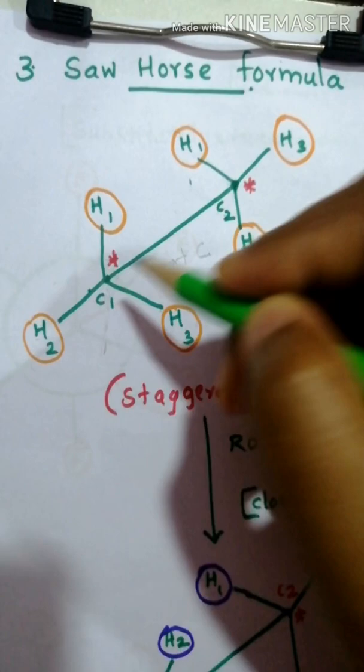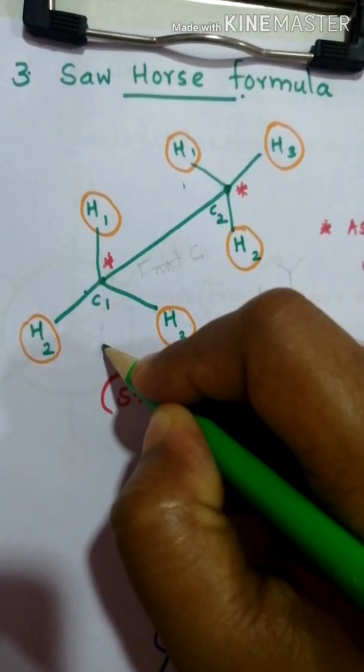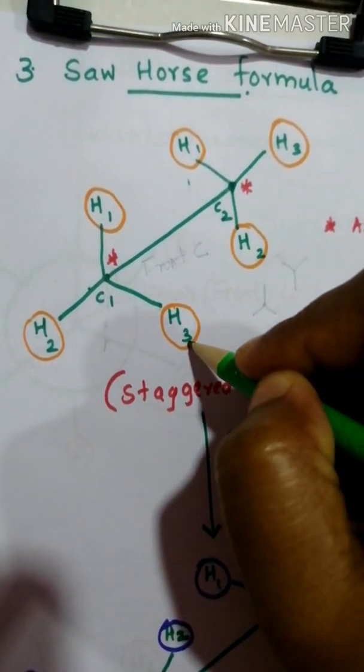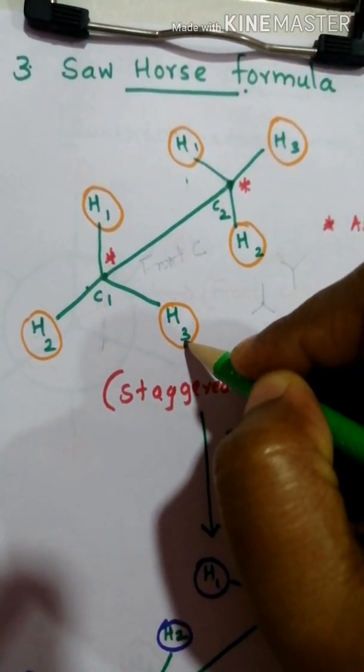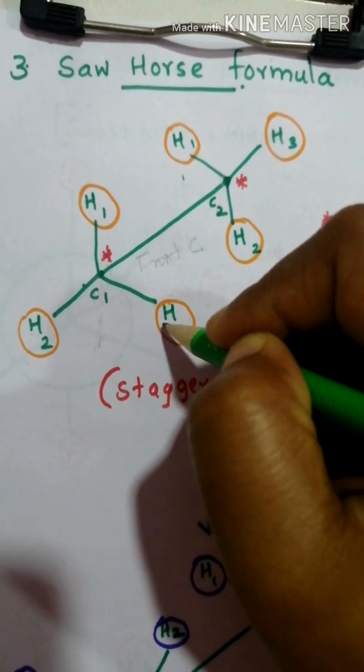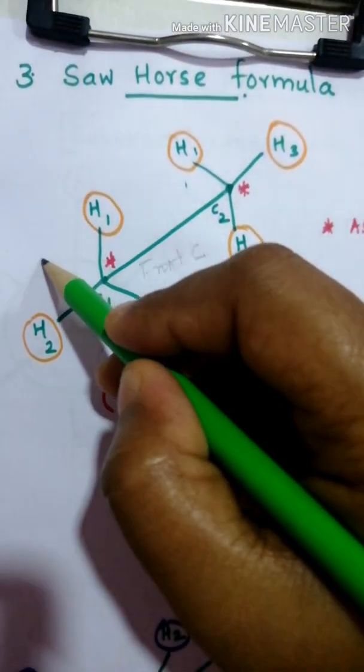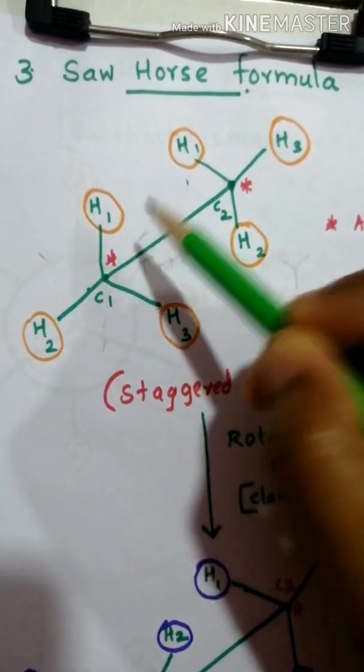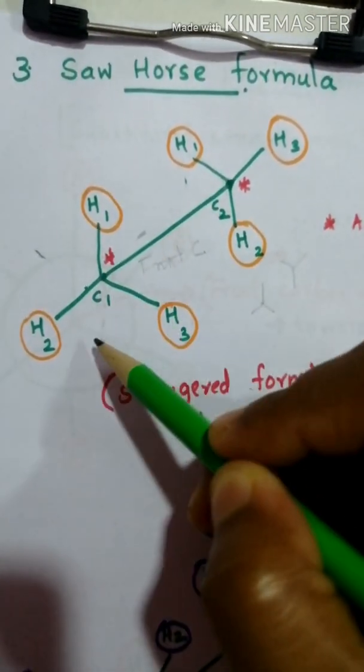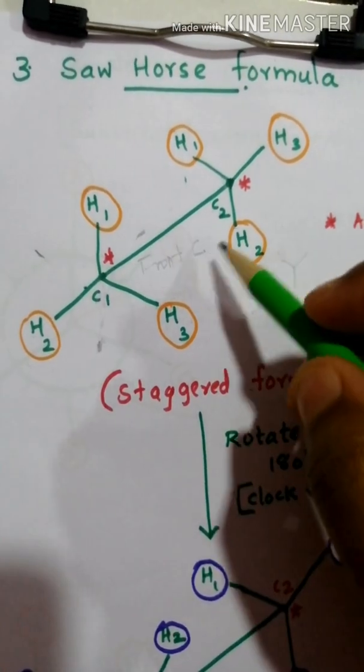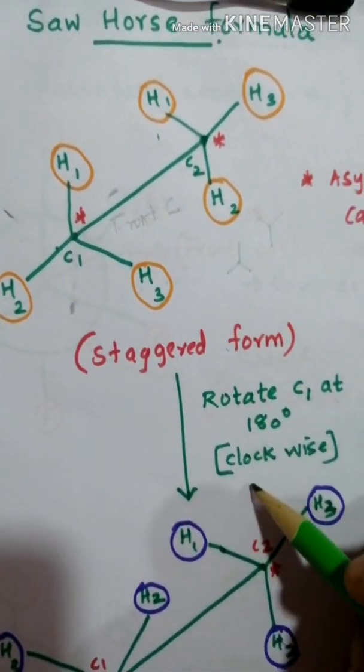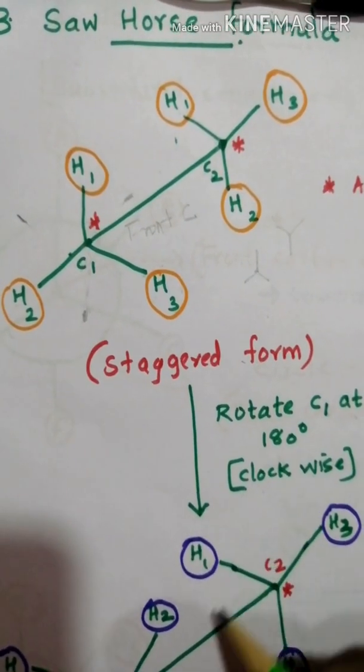This means H1 comes at the opposite position. H3 undergoes 180 degree clockwise rotation and comes to this position. H2 comes at this position. There is no change in C2; we only rotate the C1 carbon.